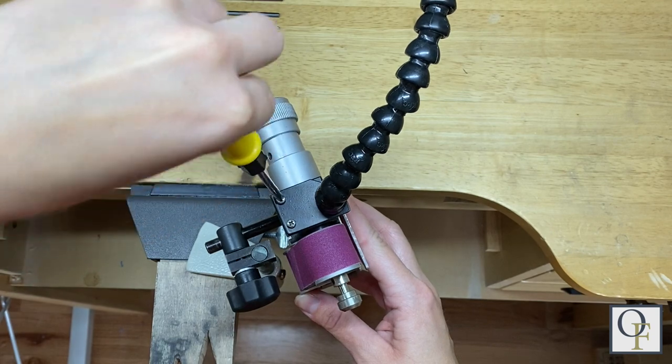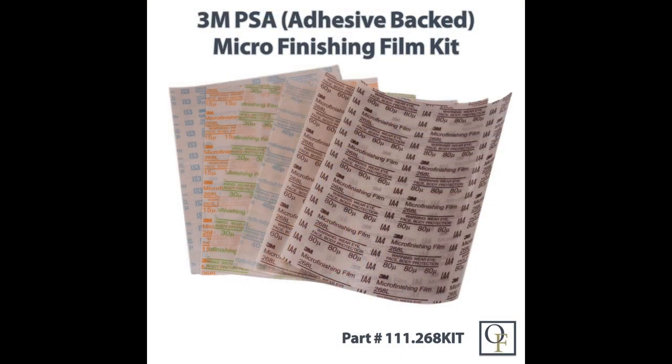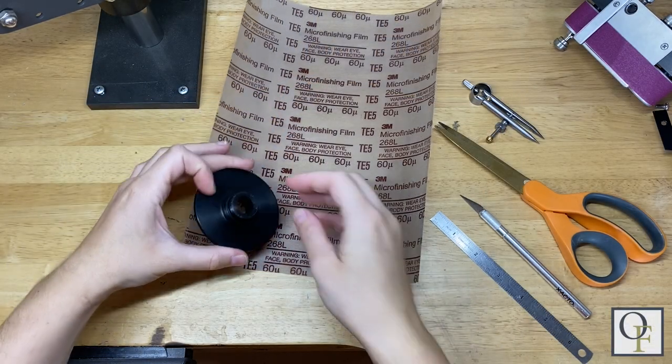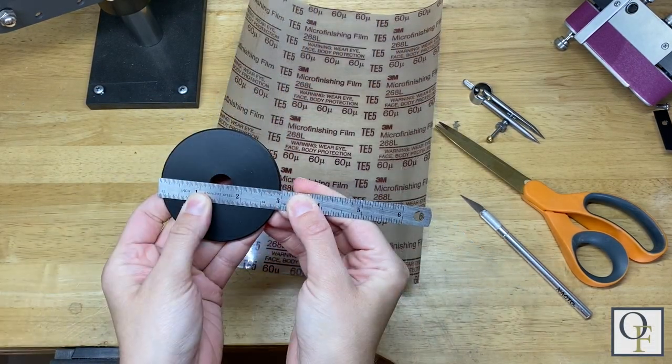Next let's talk about the disc sander. You will need to cut your own discs from a PSA adhesive backed abrasive sheet. The dimensions are 3 inches with a half inch center hole.